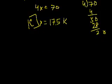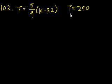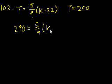Problem 102. If t is equal to 5 ninths times k minus 32, and t is equal to 290, then what is k equal to? This is kind of one of those speed problems. So we have 290 is equal to 5 ninths times k minus 32.